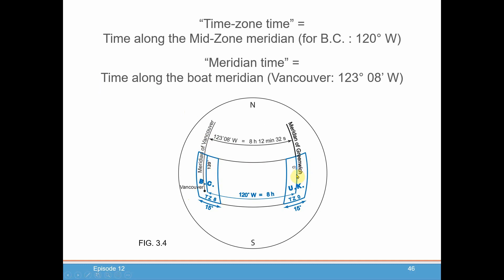From Greenwich to the BC meridian is 120 degrees, which is exactly eight hours. But if you wanted to keep time based on the meridian you're located on — your local mean time — you'd have to take into account how far you are from Greenwich. You're not going to be exactly 120 degrees; say you're at 123 degrees and 8 minutes — that needs to be converted into a certain amount of time. These concepts we're going to run into time and again throughout the course.